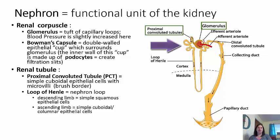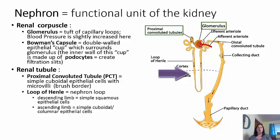The loop of Henle is the nephron loop. It has a descending limb made of simple squamous epithelial cells — this is thin, which means water can pass freely through this side. On the other side, the ascending limb is thicker, made of simple cuboidal or columnar epithelial cells, which does not allow water to move as freely. This becomes important when we talk about holding water back into the blood.